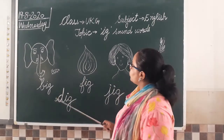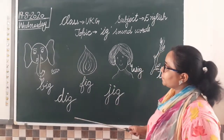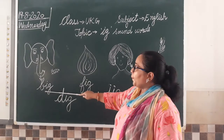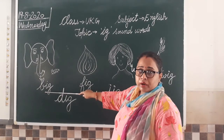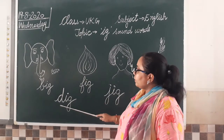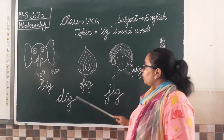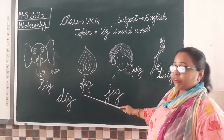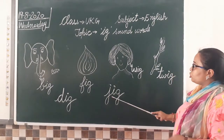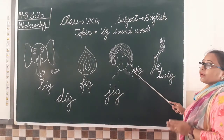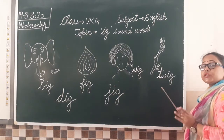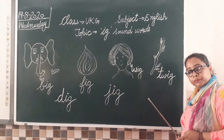Let us give a revision of the words we have learnt. Buh, Ig — Big. Duh, Ig — Dig. Fuh, Ig — Fig. Juh, Ig — Jig. Wuh, Ig — Wig. Twuh, Ig — Twig. Okay.